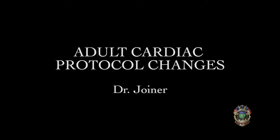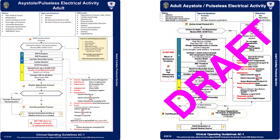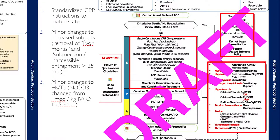Starting with adults: asystole and PEA. The first change is that we've added standardized CPR instructions to match the state protocols. Most of the changes put into place for these protocols are to be more in line with the states, similar to what we did with the adult airway protocols.